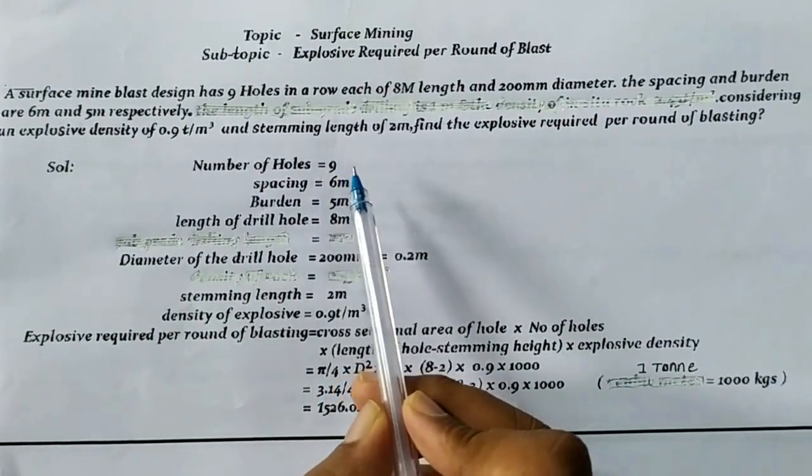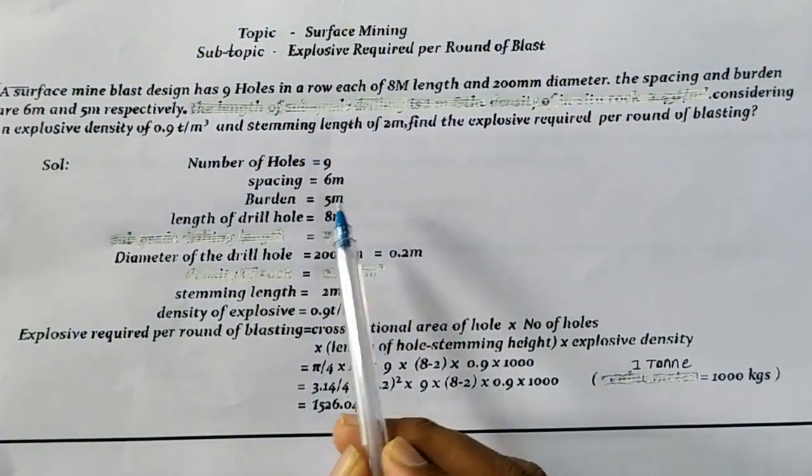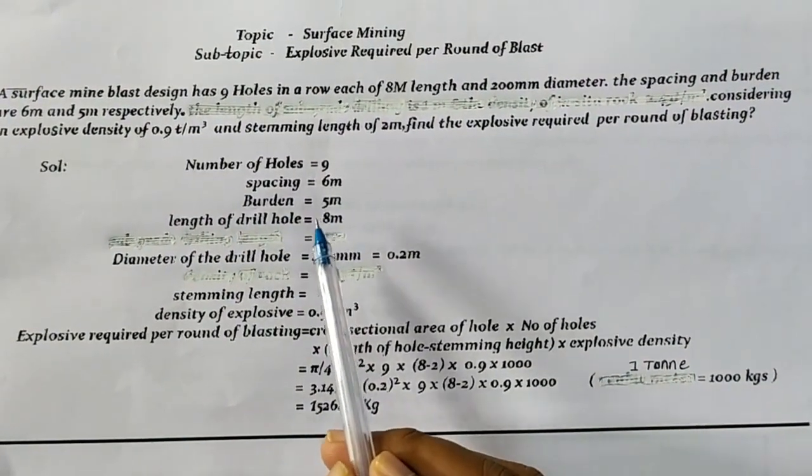The number of holes is 9, spacing is 6 meters, burden is 5 meters, and length of drill hole is 8 meters.